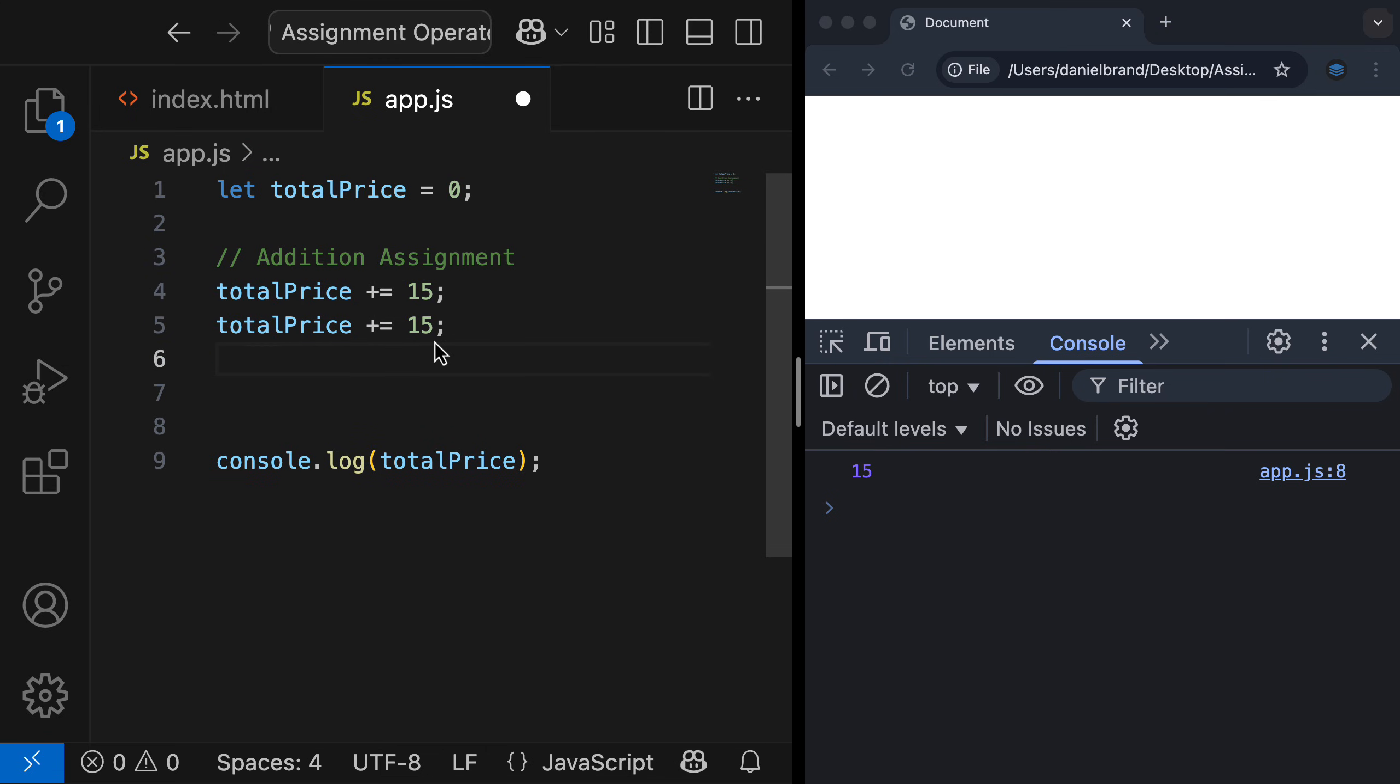I'll refresh the console and you can see the total price is now 15. Let's say the user adds another item for $25. I'll refresh and you can see the total price is now 40. That is 25 added to 15. And let's say the user adds one more item which costs $30.